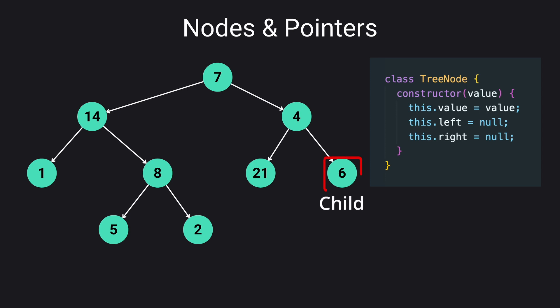For example, here 6 is the child node of 4 and 4 is the parent node of 6. And also 21 and 6 nodes are siblings because they share the same parent which is 4.